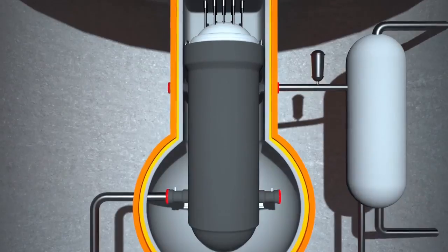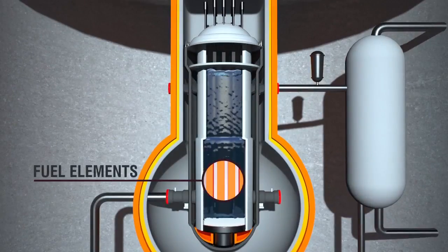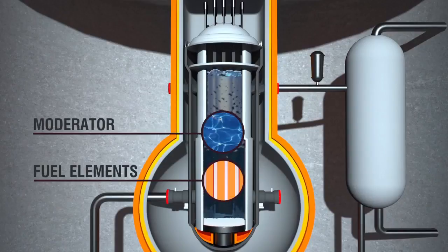The nuclear reactor consists of three core components: fuel elements, moderator, and control rods.